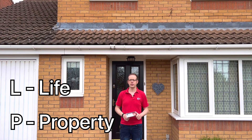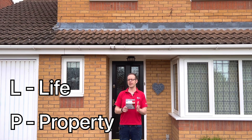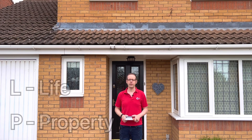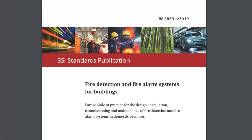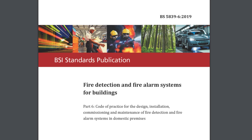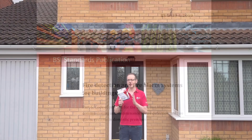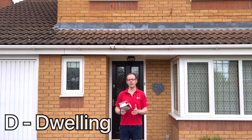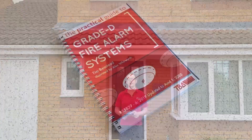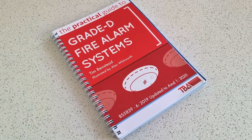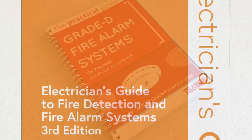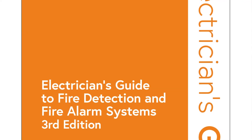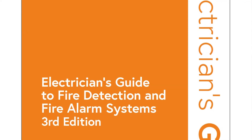These are the identifying letters used in BS5839-1, but this information doesn't relate so much to dwellings — for that you need to refer to BS5839-6. This standard adds an additional identifying letter, D for dwelling, and these are the categories we'll be looking at in this video. Much of the information we'll be referring to can be found in the Practical Guide to Grade D Fire Alarm Systems available on docstore.co.uk and the Electrician's Guide to Fire Detection and Fire Alarm Systems published by the IET.